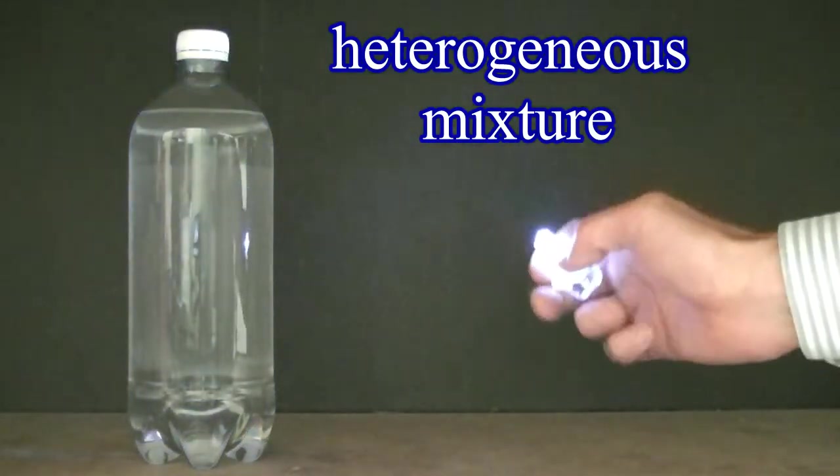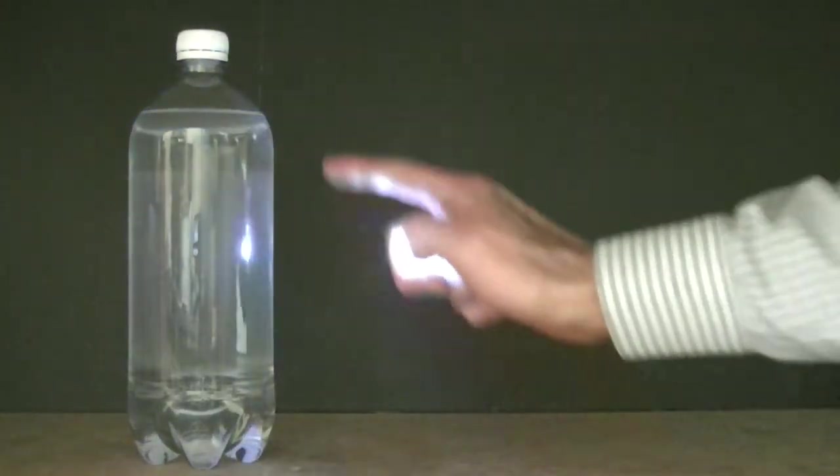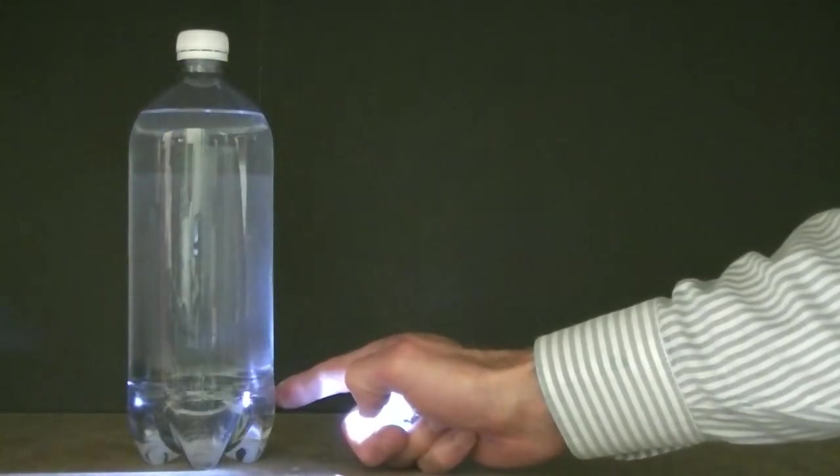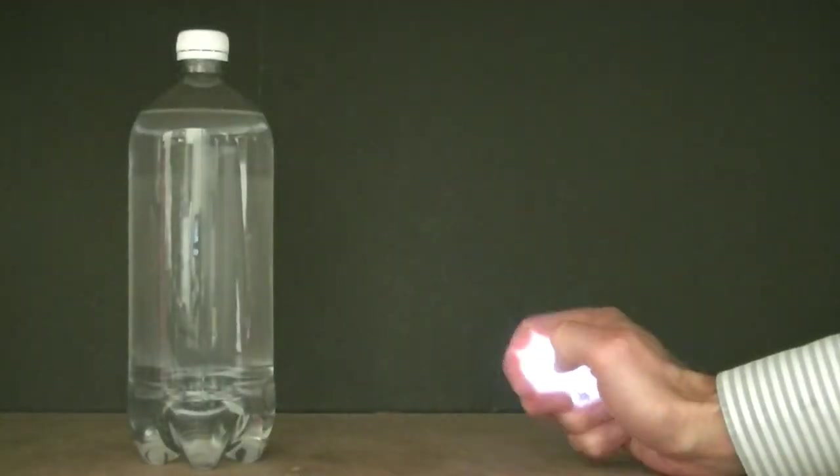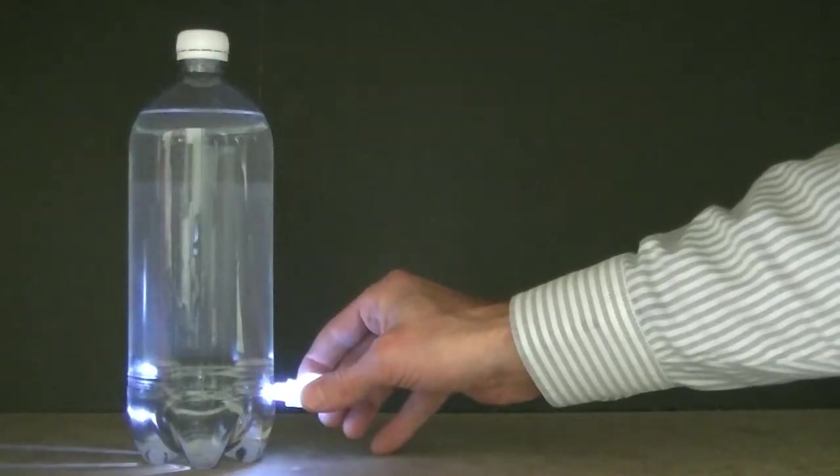Now check this out. This particular heterogeneous mixture separates back into an alcohol layer on top and a sodium carbonate layer on the bottom over time. We can see this separation take place by shining light into the lower region.